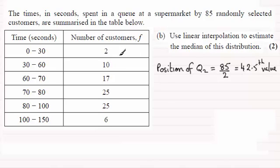And I can see that we've got two values here which are less than 30. Next, if I look at adding 10 and 2, I've got 12 values which are less than 60. And then we've got 12 plus 17, which is 29. 29 values are less than 70.